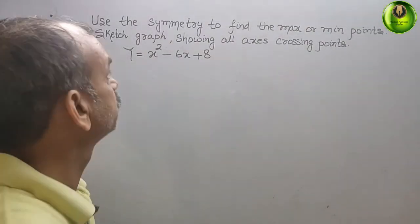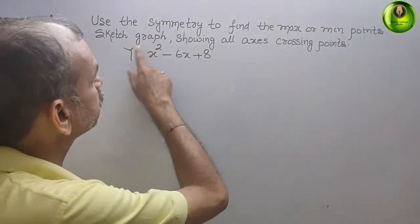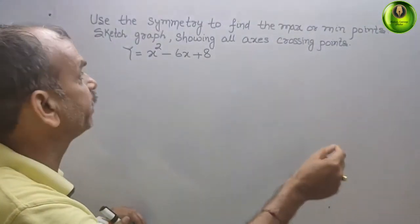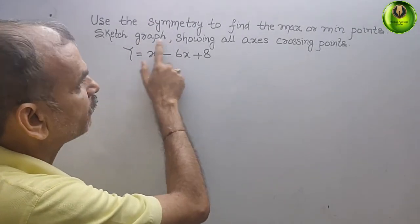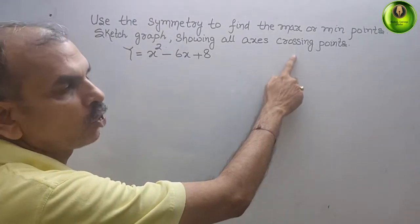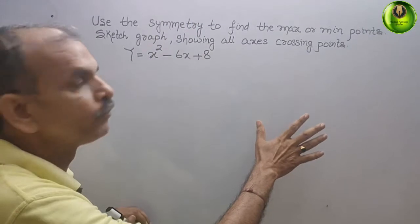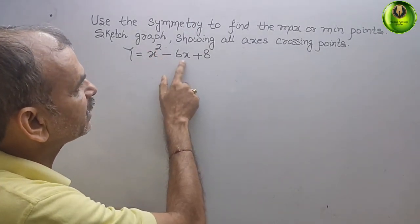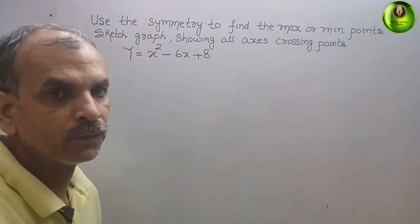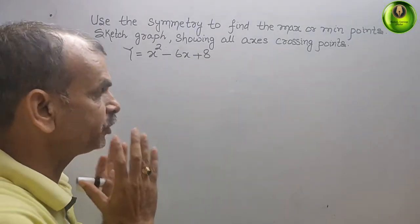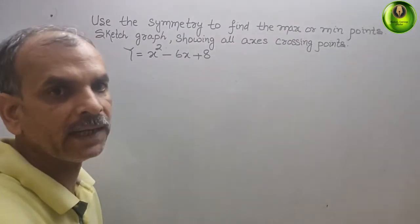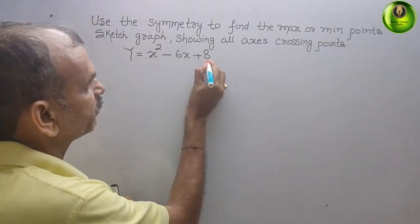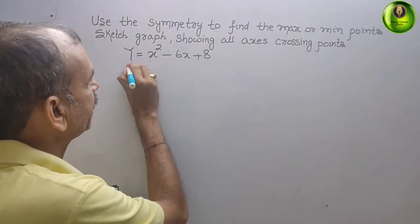Your question is: use the symmetry to find the maximum or minimum points, and sketch a graph showing all axes crossing points. They have given you y is equal to x squared minus 6x plus 8. If you see this problem, you will get a quadratic equation, and here it is the y.